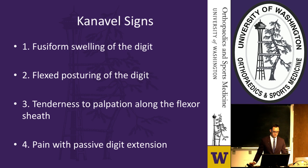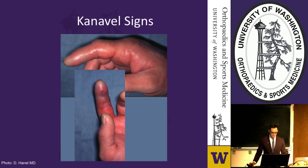The four Cannavel signs are: fusiform swelling of the digit, flexed posturing, tenderness on palpation along the volar sheath, and pain with passive extension of the digit. These images highlight some of these findings as demonstrated in a pediatric patient showing all four Cannavel signs present.